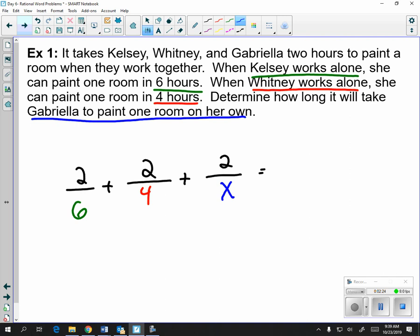And they want you to figure out how long it will take Gabriella to paint one room on her own. So their individual times went in the denominator and x is equal to the number of hours for Gabriella. And we're talking about painting one room together, right? They didn't say painting two rooms. So we're going to equal one.